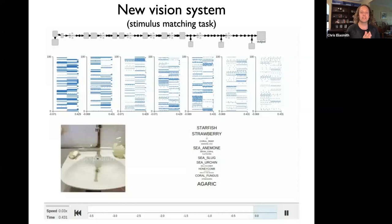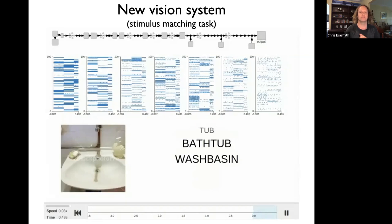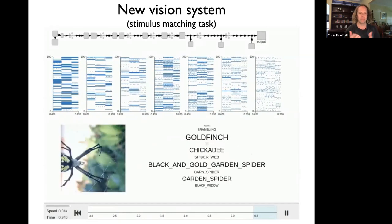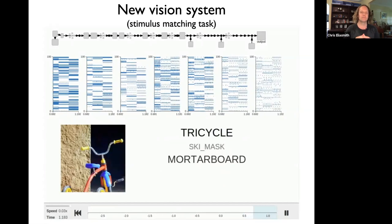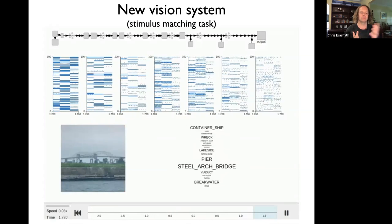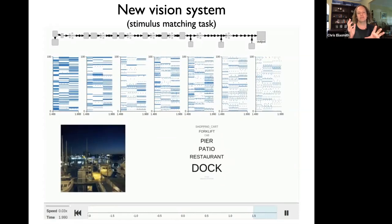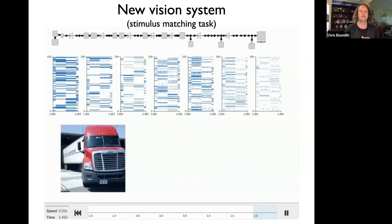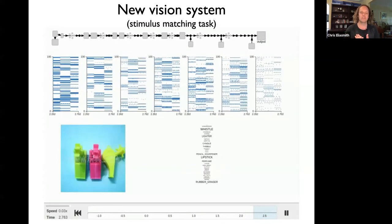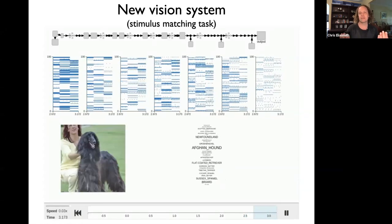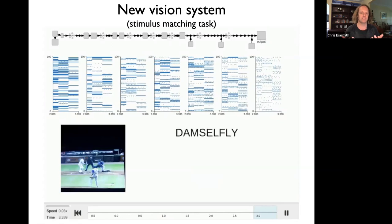The vision system is significantly improved. This has allowed us to show the vision system full color images like the one on the left — before it was just recognizing digits from MNIST. Now it can see full color images and classify them into one of a thousand different categories. We've also used that to do a stimulus matching task where you show it two pictures one after the other and ask whether they are from the same category.